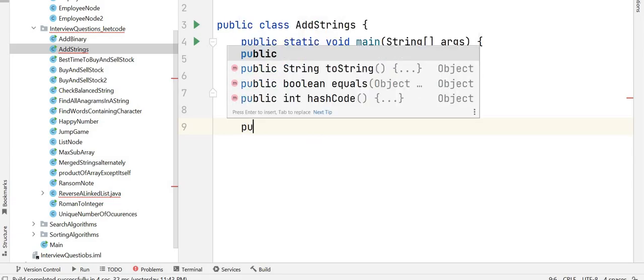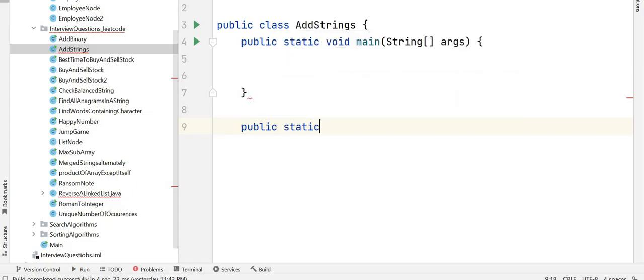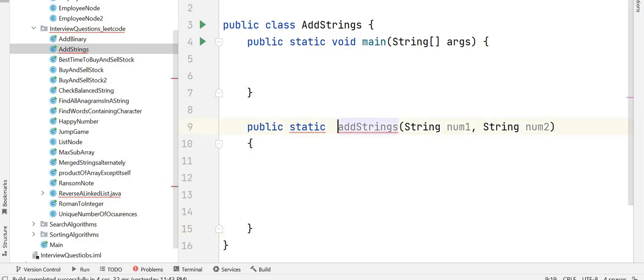Now let's write the method for it which would be your public static addStrings and your inputs are string num1 and string num2. And what would be your return type? That would be string since you are returning the output as a string.